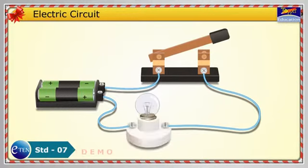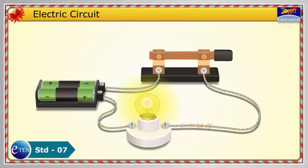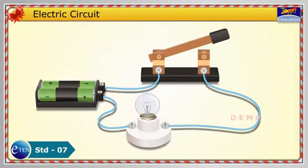If a light bulb is connected to the circuit, it starts glowing. Now, if the switch is open, the path of the circuit is broken. The current stops flowing and the light bulb stops glowing.